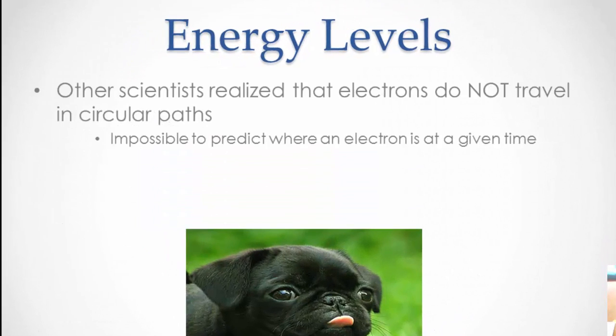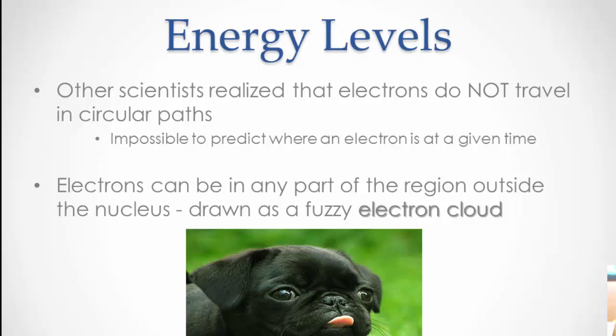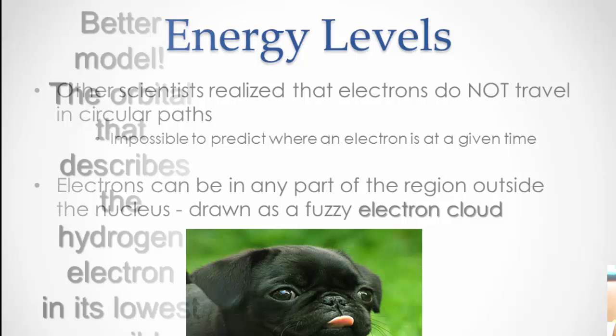Other scientists realized that electrons do not really exist in circular paths, and it's actually impossible to predict where an electron is at a certain time. Electrons can be in any part of a region outside the nucleus, and that's often drawn as a fuzzy electron cloud.